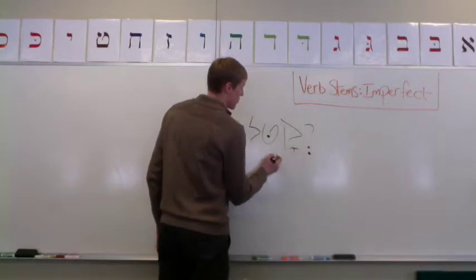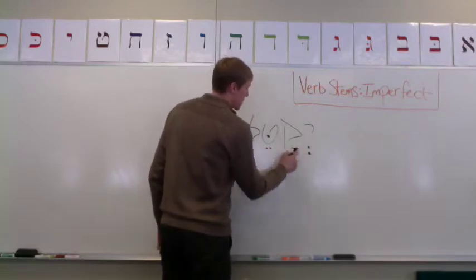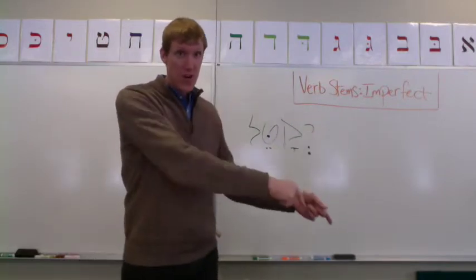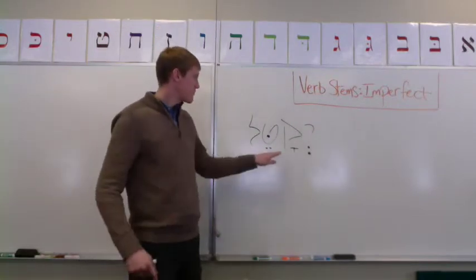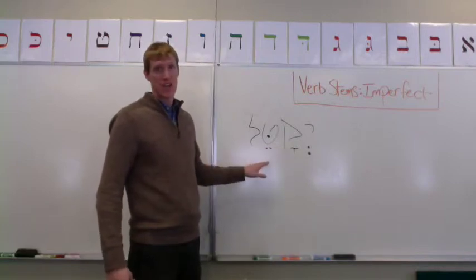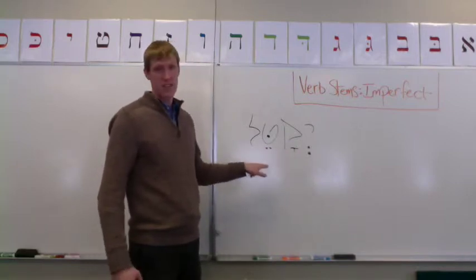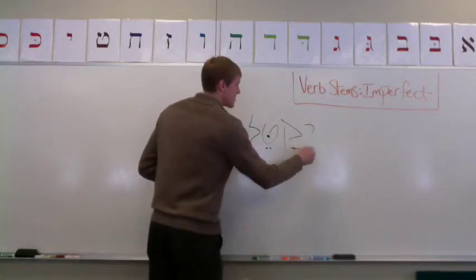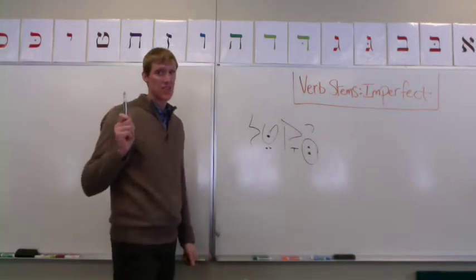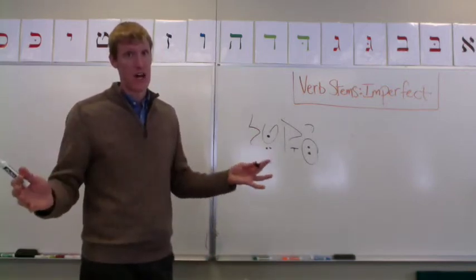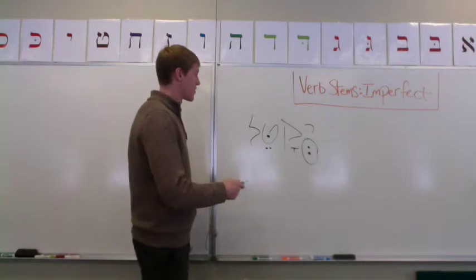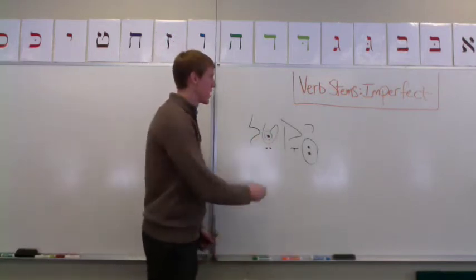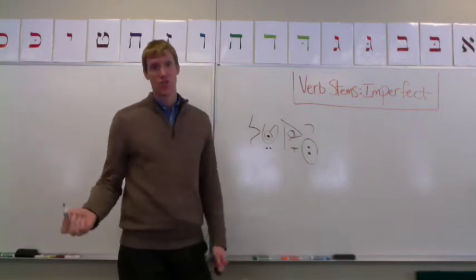And the rest of the form is qamets and tsere. Now, you'll recall from the Nifal we just talked about — the Nifal has a qamets and a tsere under its first and second root letters as well, but the main difference is a sheva instead of a hirik, which is a big difference — that's obvious. And also a dagesh forte in the middle root letter,